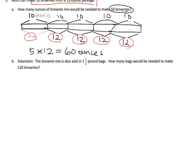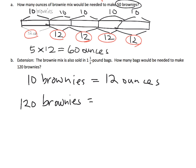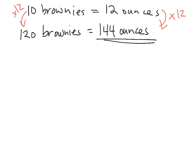And the extension is the brownie mix is also sold in one and a half pound bags. How many bags would be needed to make 120 brownies? Oh, my goodness. So, well, 120 brownies, if 10 brownies requires 12 ounces. But now we want 120 brownies. Well, that's basically 12 copies of 10, which means we're going to need 12 copies of 12 for the ounces. So, that gives us 144 ounces. So, we're going to need 144 ounces. Well, what's a one and a half pound bag? Well, one and a half pound bag.